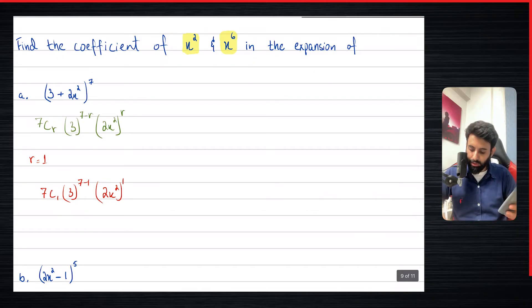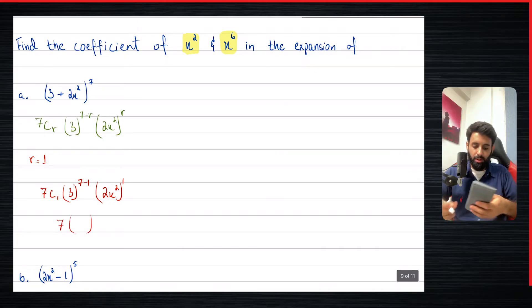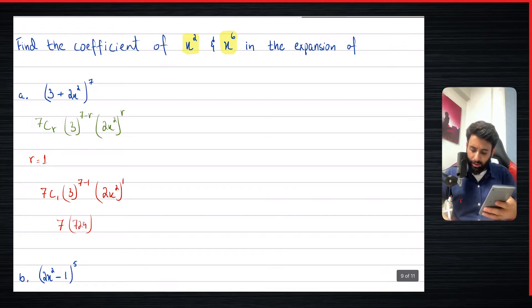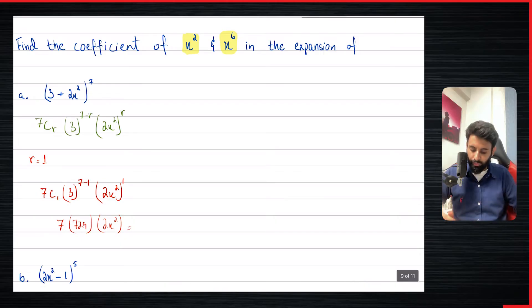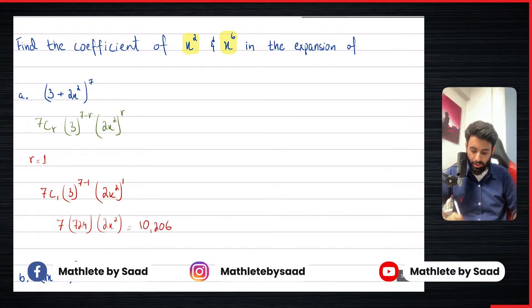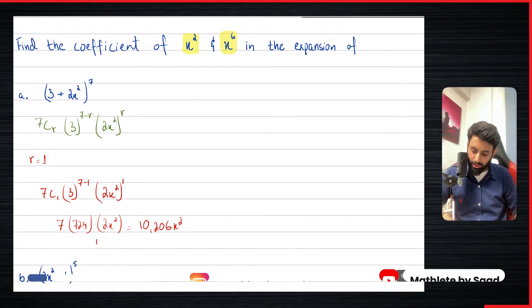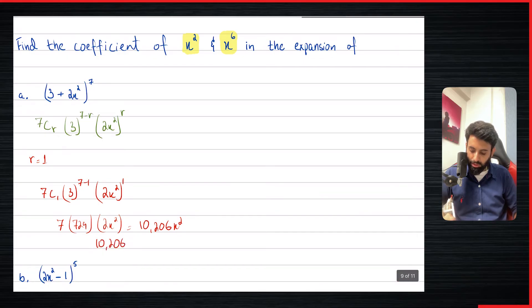So 7C1 is 7, and 3 to the power of 7 minus 1 means 3 to the power of 6, which is 729. And (2x²) to the power of 1 is 2x². So when everything is multiplied, we will get x squared — that solves the problem. So 7 times 729 times 2 gives us 10,206x², and the final answer is 10,206.